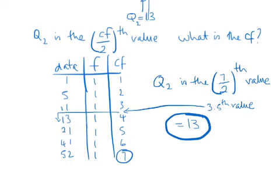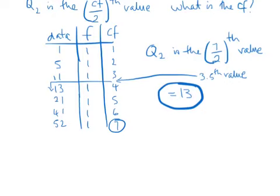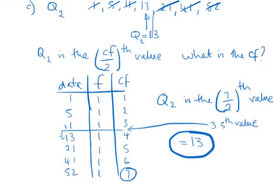That's the same as we got earlier when we crossed off all the numbers. So instead of that, we could have used the other technique: find the 7 over 2 value, which is the 3.5th value, go down the cumulative frequency, find it between 3 and 4, and then go to the next one higher, which is 13.